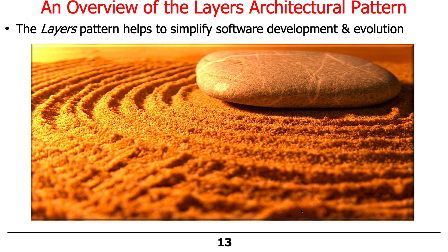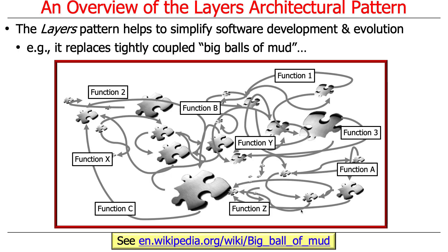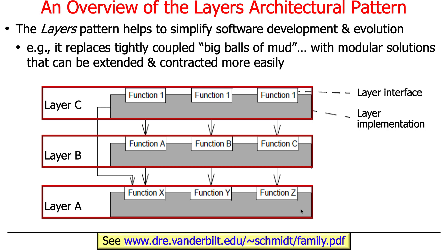The purpose of this is to try to simplify software development and evolution. In particular, the goal is to take a tightly coupled big ball of mud — which is what you have if you don't use layering, where you might have hundreds of functions just floating around in a general namespace — and instead of organizing software like that, which is tedious, error-prone, and complicated, you have a modular solution that can be extended and contracted more easily. You can think of things in a neat, orderly manner, with different families of applications and services that can be added to, removed, or extended in a systematic way.